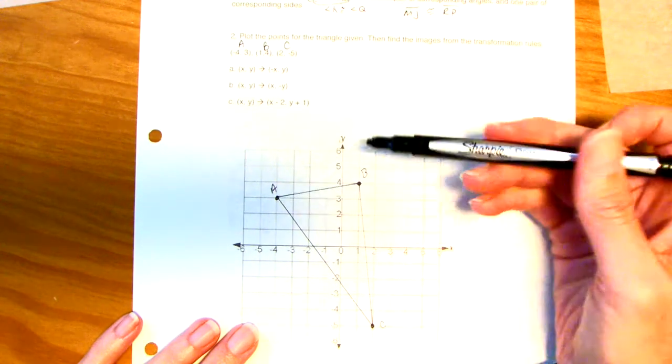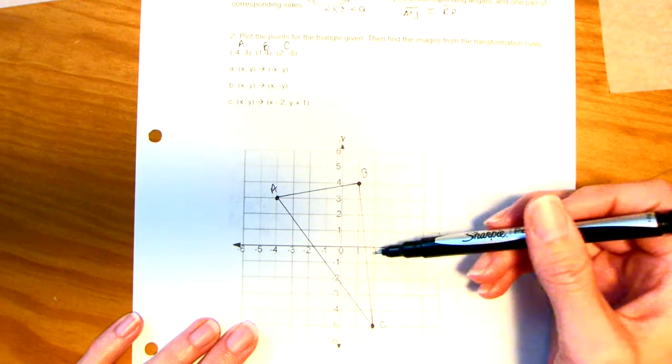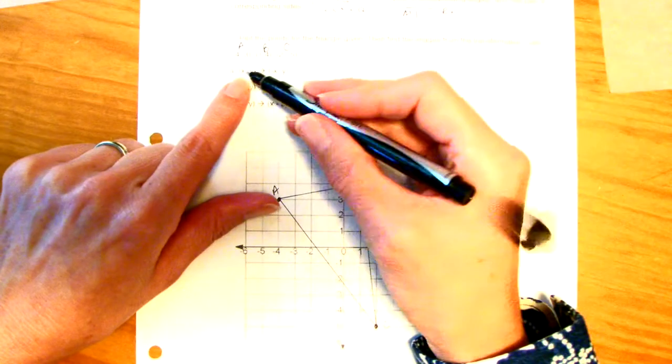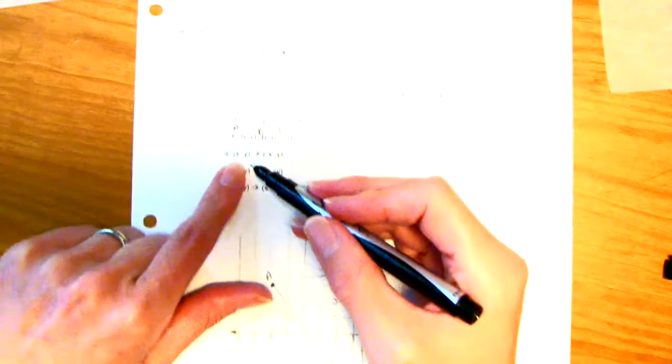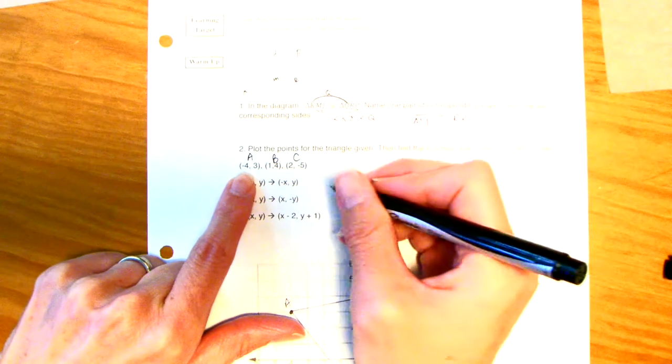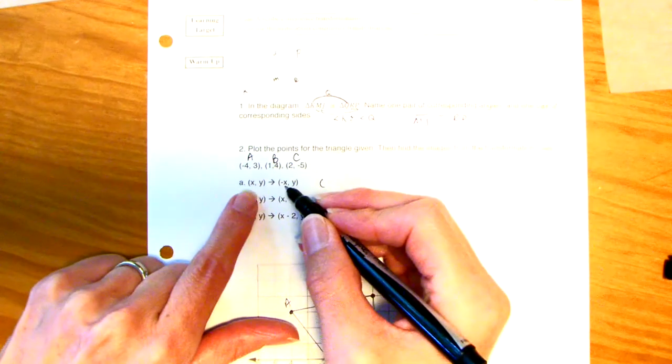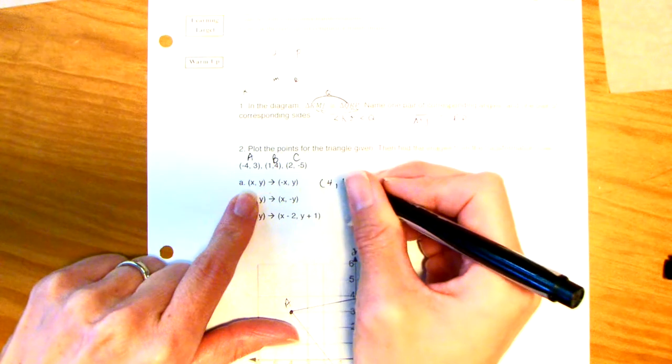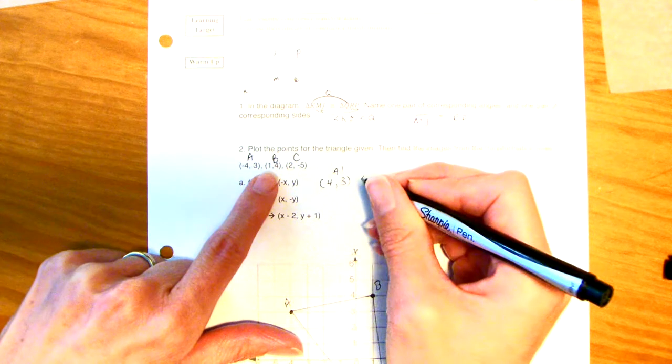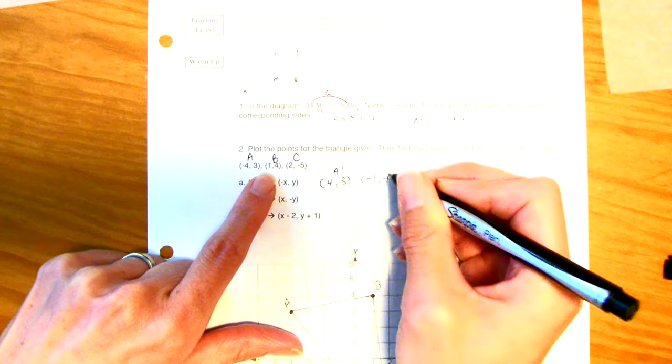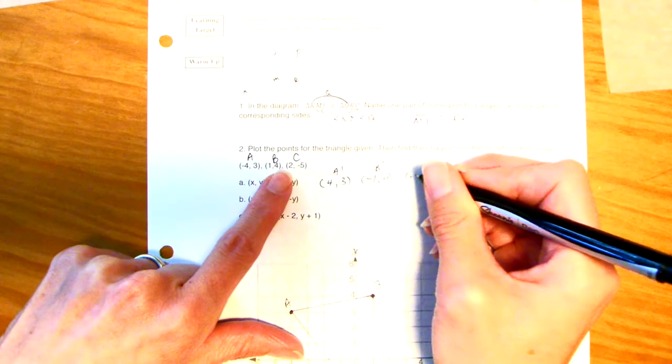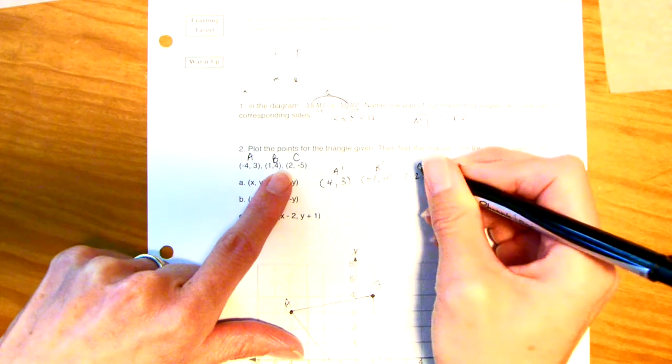A is at negative 4, 3. B is at 1, 4. And C is at 2, 5. And then connect. Now, for part A, take each ordered pair. The XY is going to change to negative XY. So point A prime will be, see how the sign for the X changes, will be 4, 3. And then the Y stays the same. B would be negative 1, 4. That's B prime. And then C would be negative 2, negative 5. That's C prime.